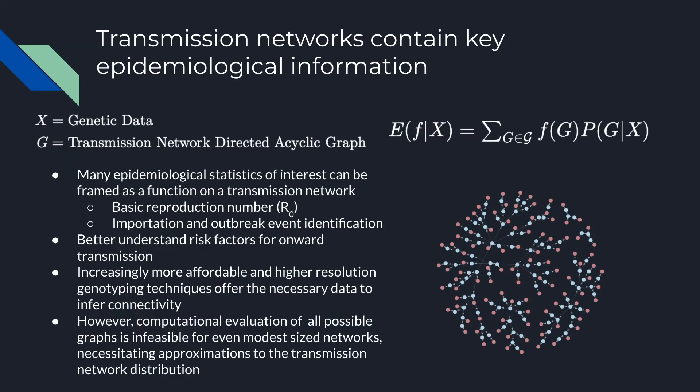Transmission networks contain key epidemiological information, such as basic reproduction number or importation and outbreak event identification, and the increasingly more affordable and higher resolution genotyping methods available offer the necessary data to infer connectivity and recover structure.